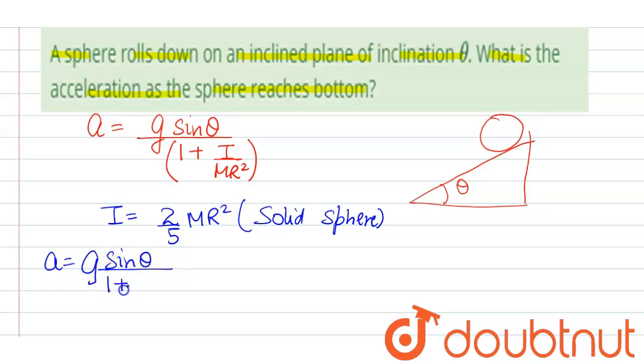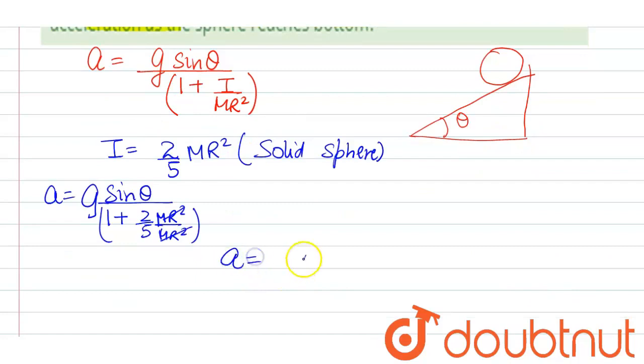divided by one plus 2/5 mr square divided by mr square. So we'll cancel out this, and on further solving here what we get: a equals g sine theta, it will be 5/7.